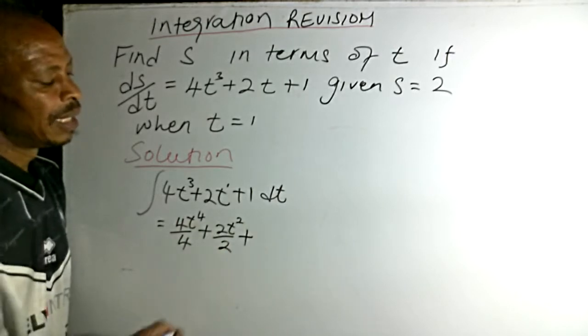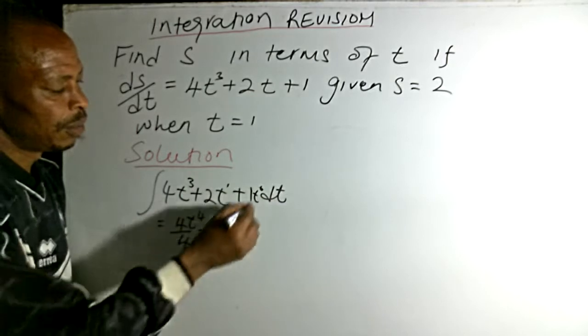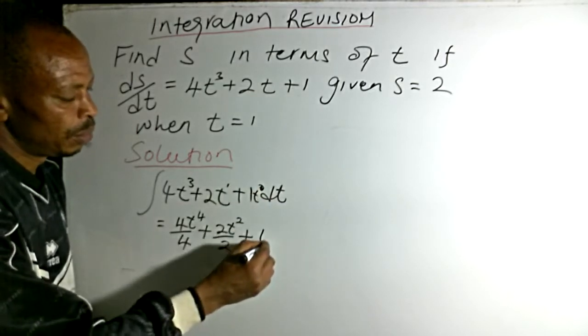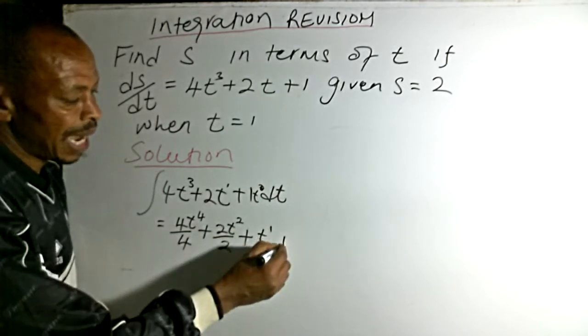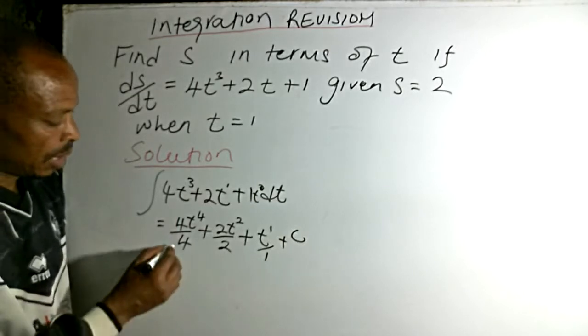We add here, we can say t is to power 0 so we add 1. This will be t to power 1 and we divide by 1, and then we add a constant c.